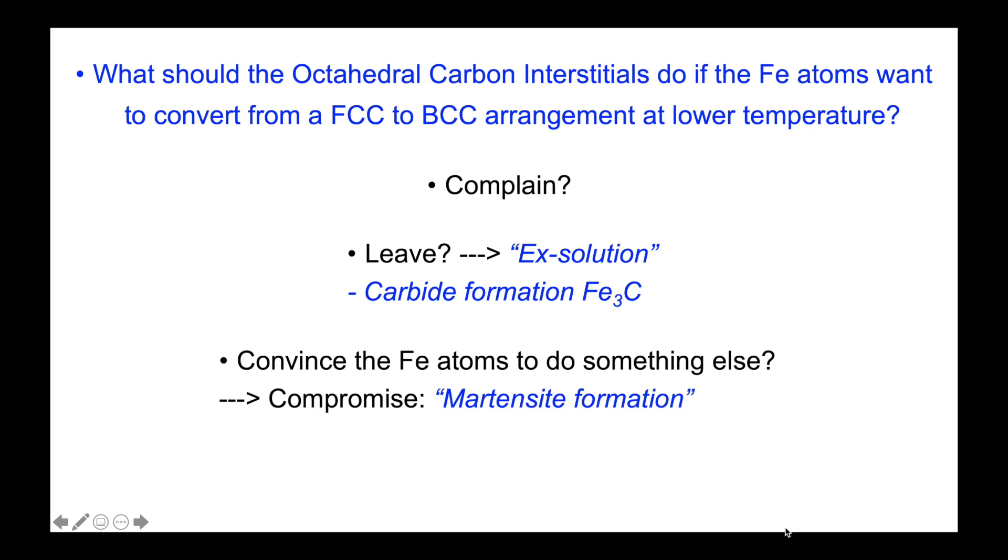Or they could convince the iron atoms to do something else. Maybe there could be some kind of compromise, where iron could partially do what it would like to do, which is approach eightfold coordination in a body-centered cubic structure. And carbon somehow finds a way to expand those interstitial sites. We'll see that this is also important, this compromise, as it leads to the formation of a very important phase called martensite.